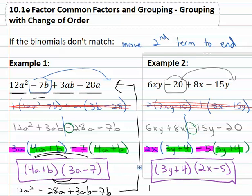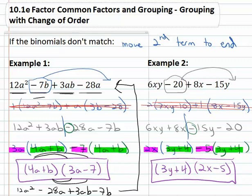So if the binomials don't match, a nice plan B is to change the order of the terms. I suggest moving the second term to the end. I want to also note that this is actually less common than we would think. It's a nice backup plan, but most of the time we don't have to change the order. So always take the time to check first. Don't change order first thing, because that might put things in the wrong order. Start by trying to factor it like it is, and if it doesn't work, then move the second term to the end.